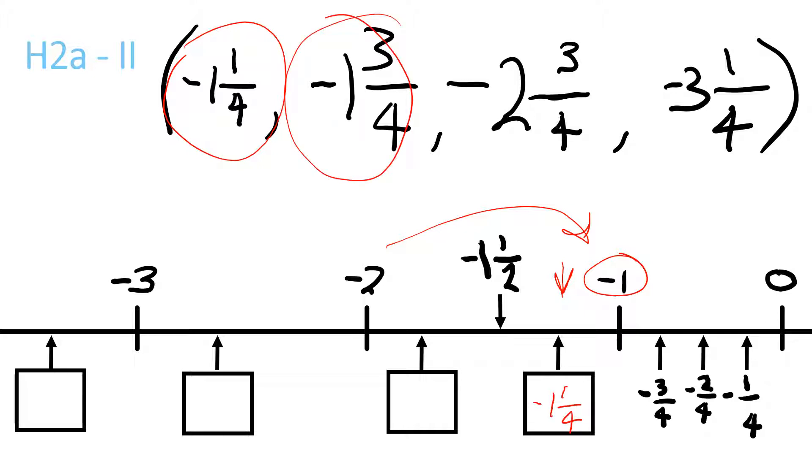Negative 1 and 3 quarters would go here because it's negative 1 and then it would be about 3 quarters here. So, negative 1 and 3 quarters.